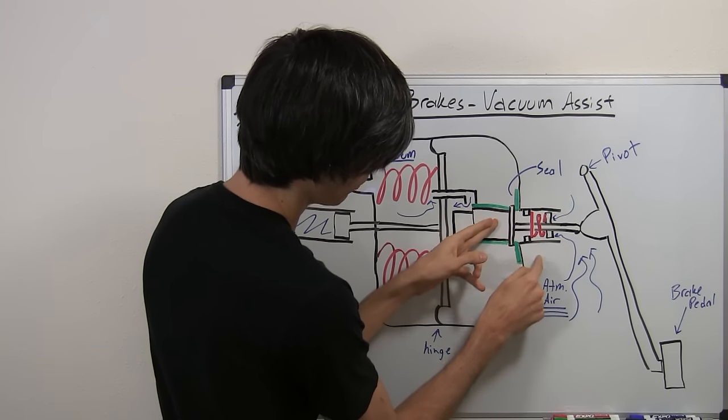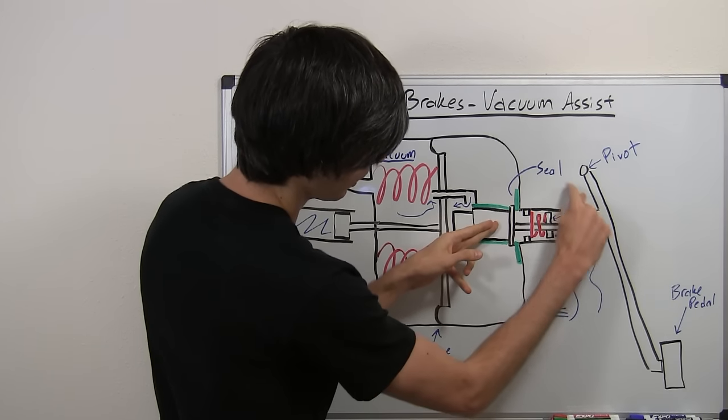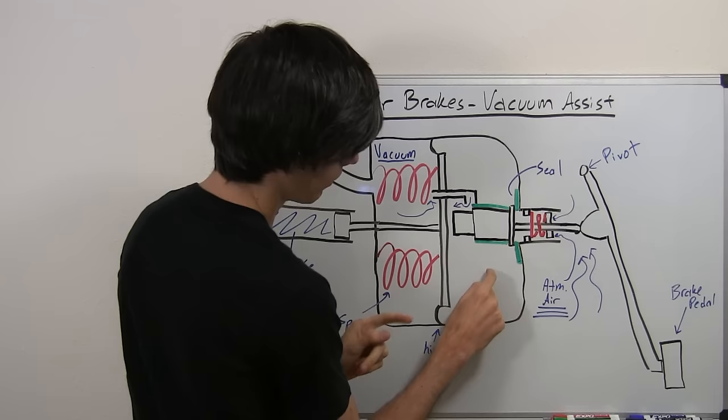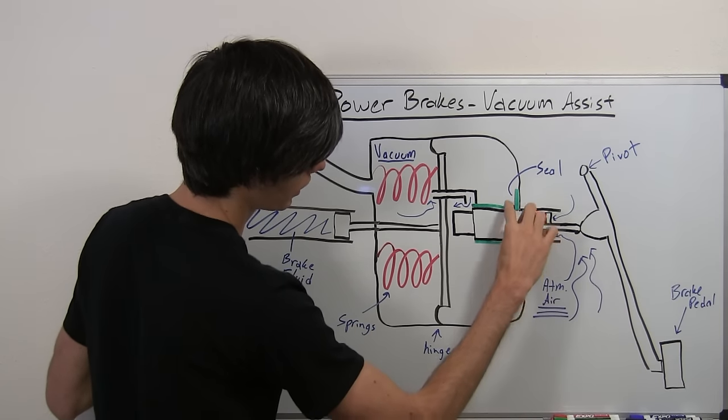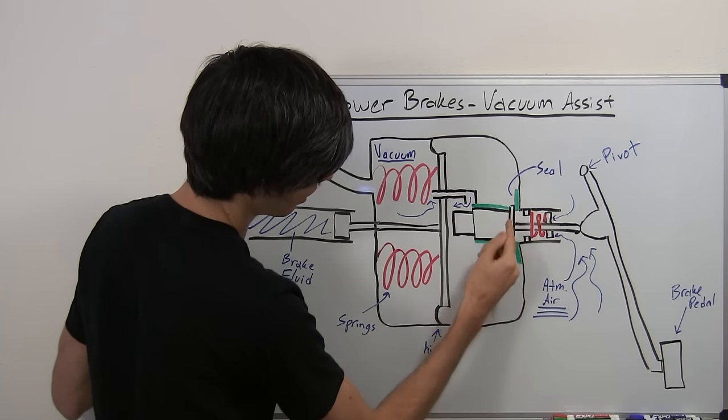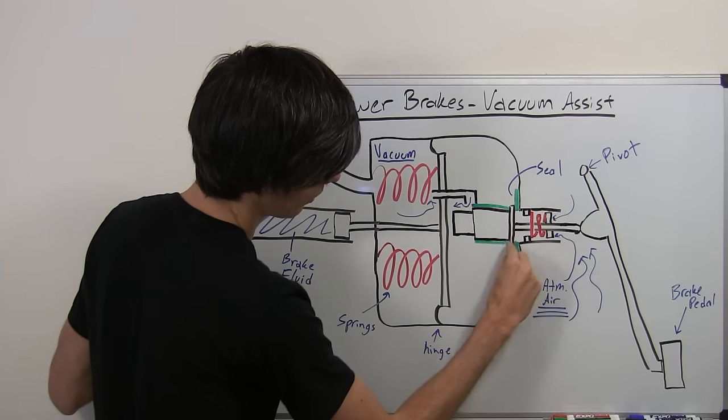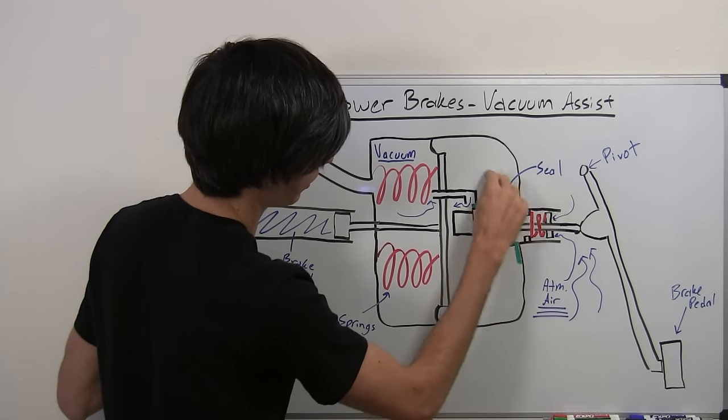Now these seals are preventing the atmospheric air, which is in this, from getting inside of this chamber. So once you press on the brake pedal, it's going to push in and this seal right here is going to be opened up, and that atmospheric air is going to be allowed to enter into here.